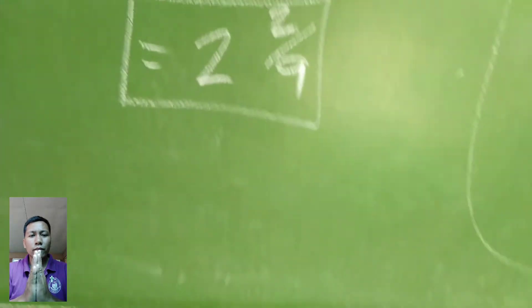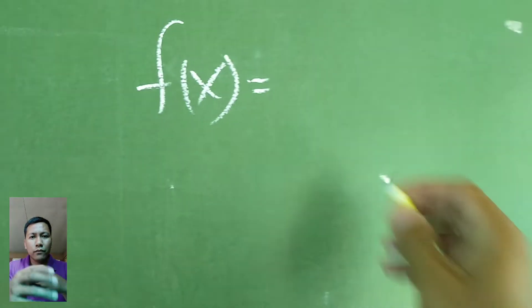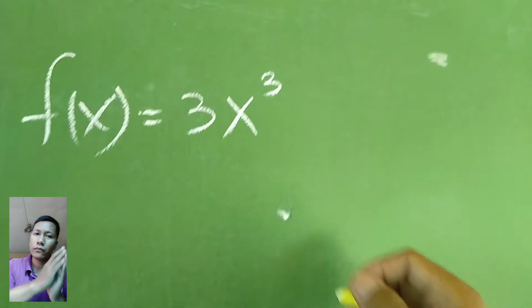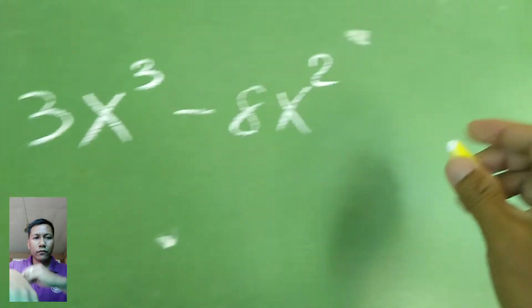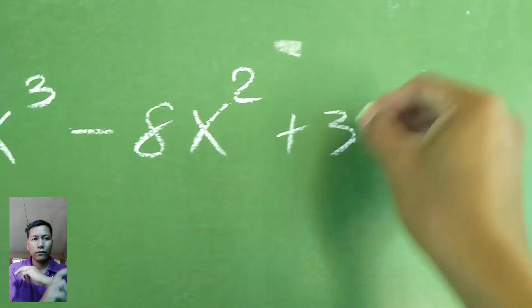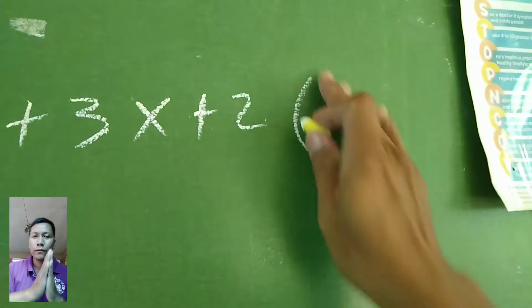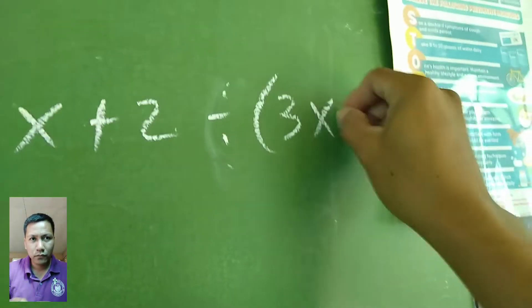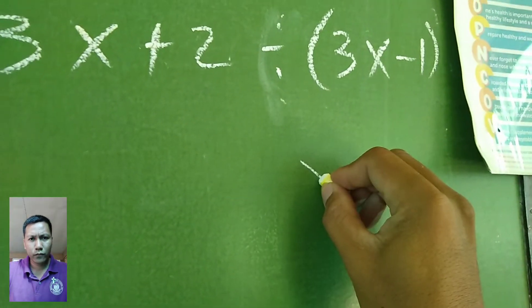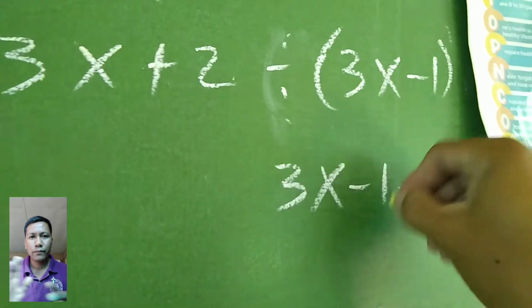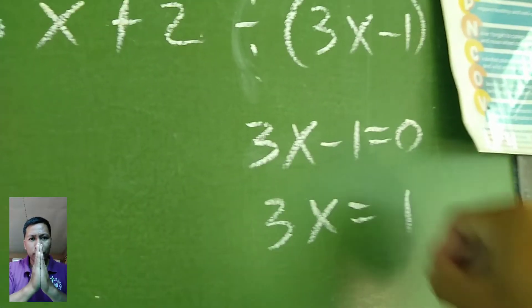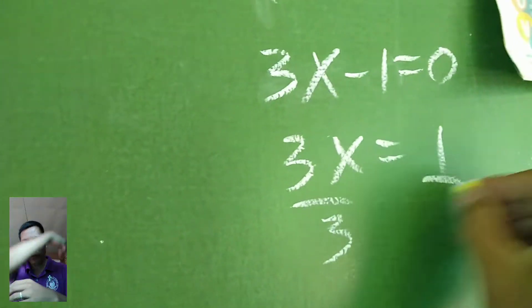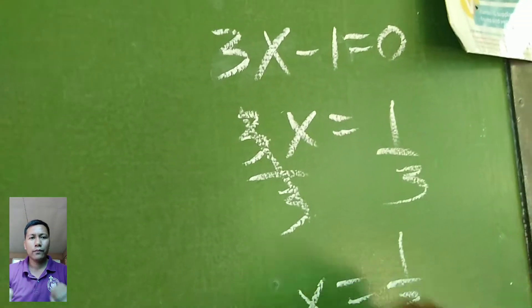Now, making use of synthetic division. Same problem. On the other board. So function of x equals 3x cubed minus 8x squared plus 3x plus 2. Our divisor is 3x minus 1. What happened earlier: 3x minus 1 equals 0, 3x equals positive 1, then divide both sides by 3. So x equals 1 third.